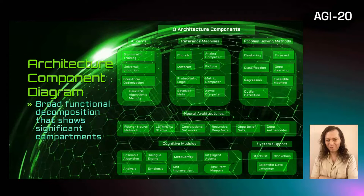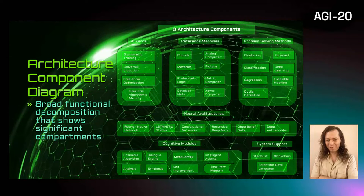Here is the Omega architecture's component diagram, which shows the broad functional decomposition without dependency arrows. The architecture here corresponds to version 0.2 and it significantly extends Alpha. The AI kernel contains general-purpose machine learning functions, eight reference machines, and six problem-solving methods are provided initially. We also include six kinds of deep neural architectures by default. Cognitive modules correspond to higher-level functions. System support provides integration with a decentralized peer-to-peer compute architecture.